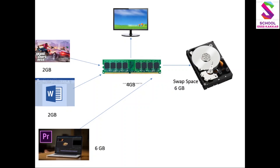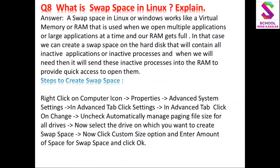I think यह concept आपको अच्छी तरह से समझ आ गया होगा. अब चलते हैं अपने question के ऊपर - swap space को आज हम create करेंगे पहले Windows के अंदर. Right click on computer icon, फिर जाएंगे properties के अंदर, properties में option मिलेगी advanced system settings की. फिर advanced tab में click करेंगे settings के ऊपर, in advanced tab click on change. वहां पे uncheck करेंगे 'automatically manage paging file size for all drives'. Now select the drive on which you want to create swap space, click custom size option and enter amount of space for swap space and click OK.